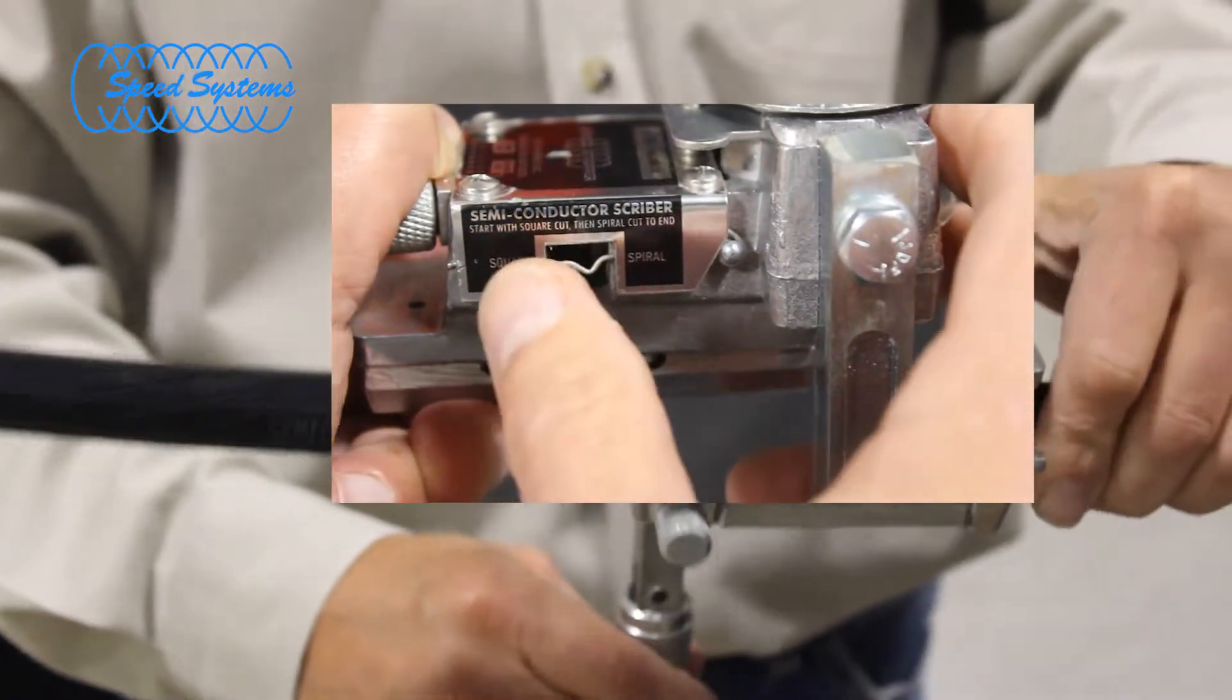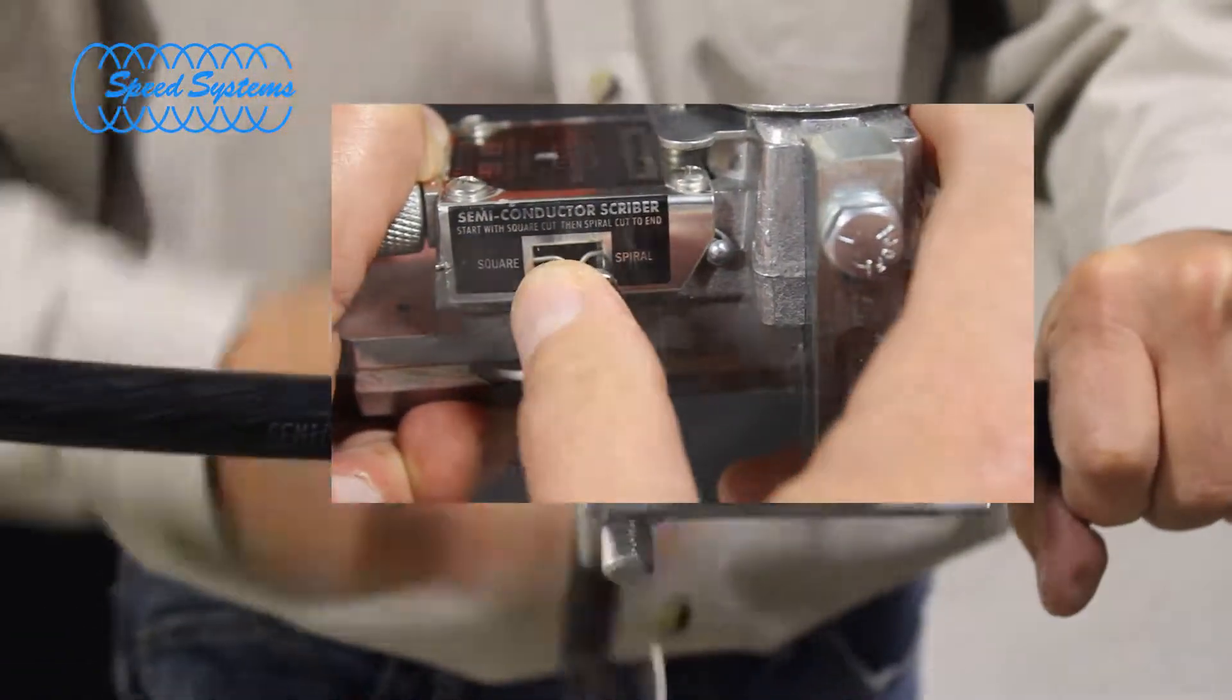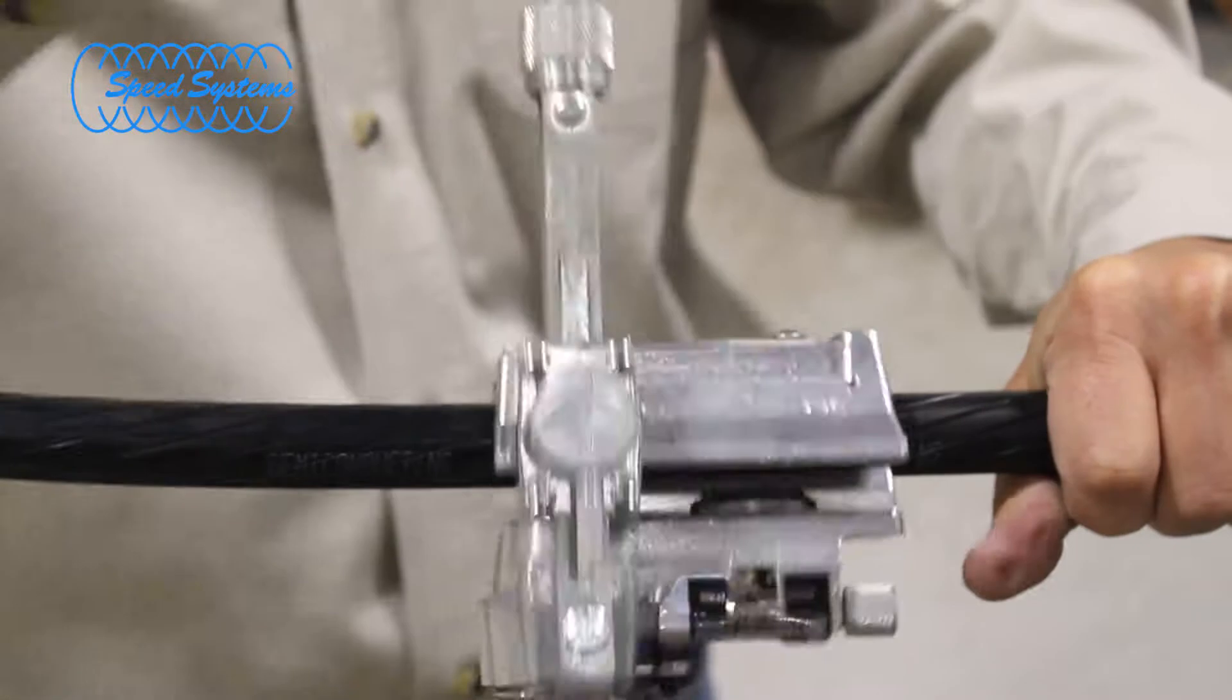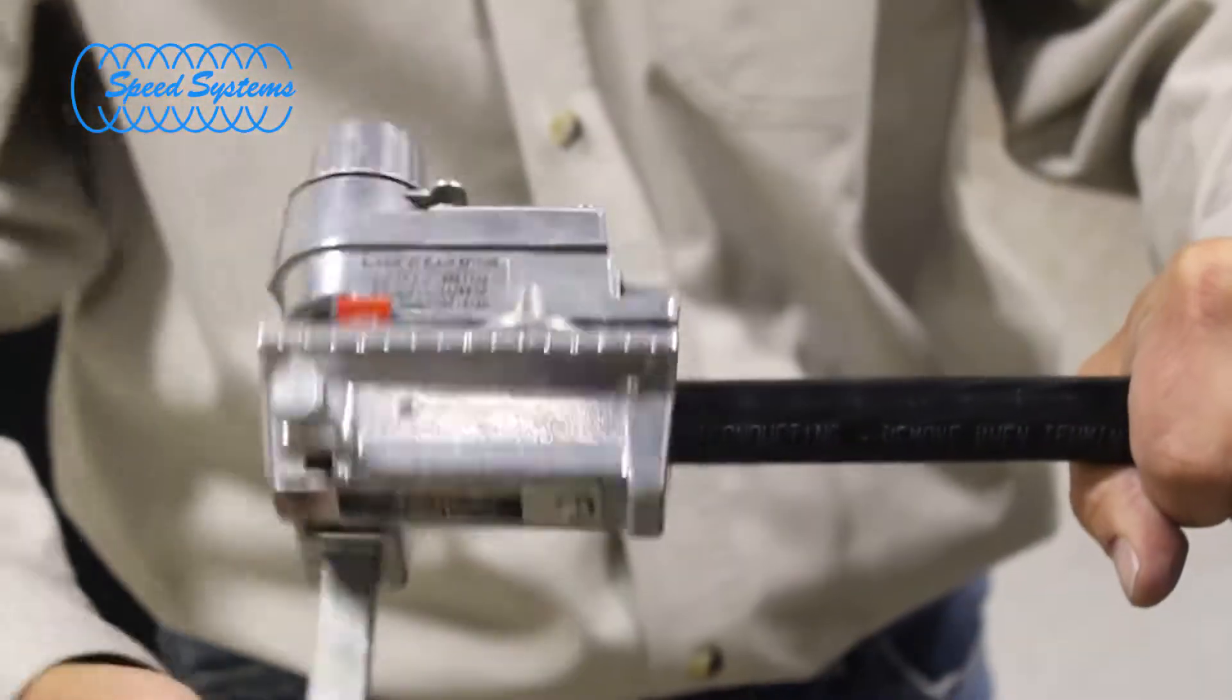Without removing the tool from the cable, change the blade to the strip-cut position and rotate the tool around the cable, allowing the tool to walk to the end of the cable.